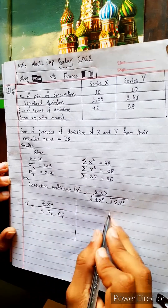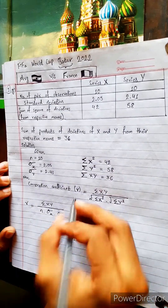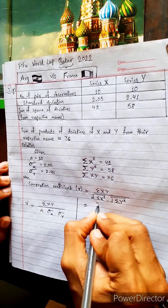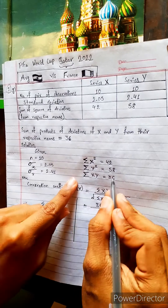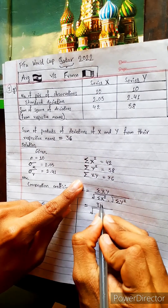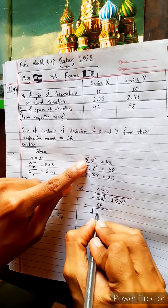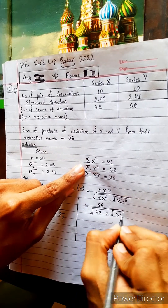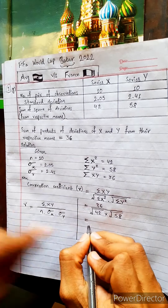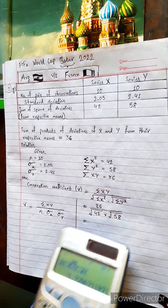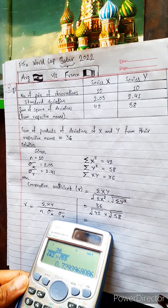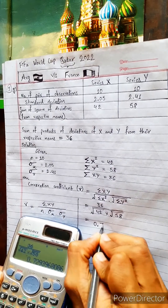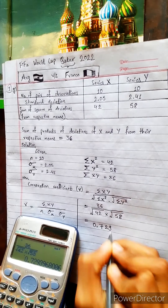Using the first formula: ΣXY = 36, divided by the square root of 42 multiplied by the square root of 58. Using the calculator directly, we get 0.729. So r = 0.729 — the third decimal is less than 5, so we round off here.